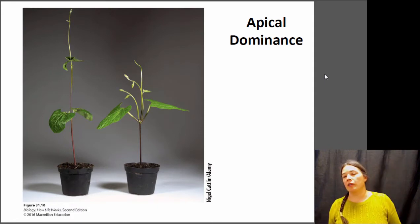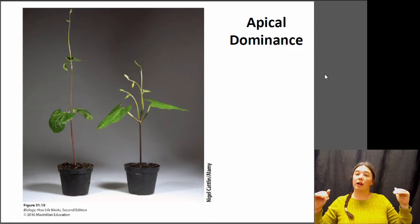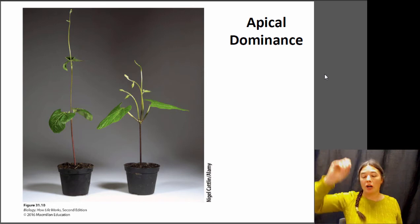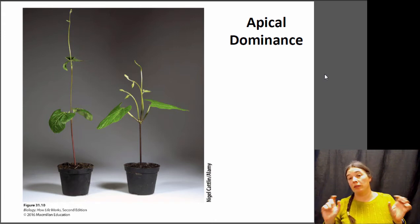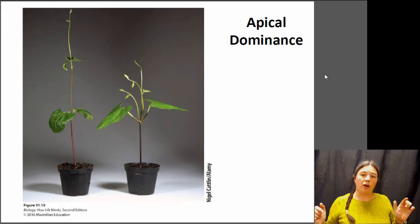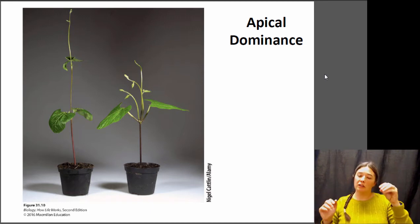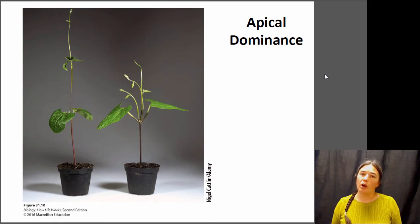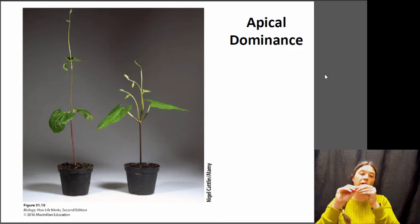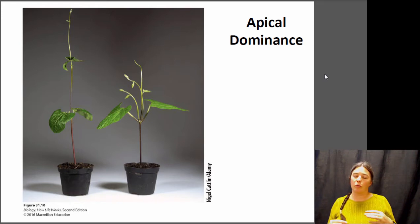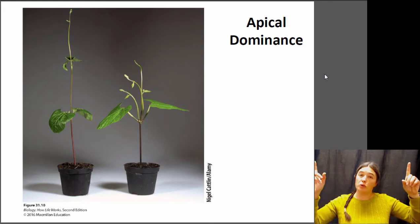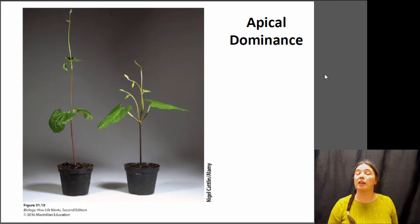The apical meristem actually suppresses the growth of other buds lower down in the stem, so most growth happens just from the apical meristem. If you cut off the apical meristem, the axillary buds will be released and they'll start to grow — that's what we call apical dominance. For example, if you're growing basil at home, rather than plucking individual leaves, it's better to cut off the whole top of the stem, leaving some leaves lower down, because then those axillary buds will grow new shoots and your basil will get bushier with more leaves to harvest.